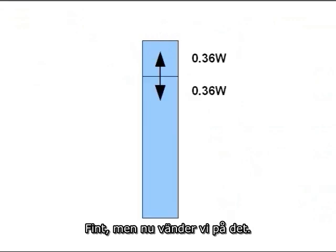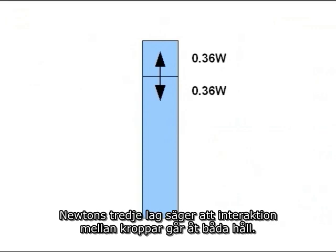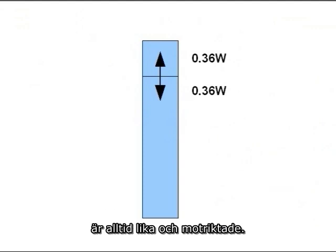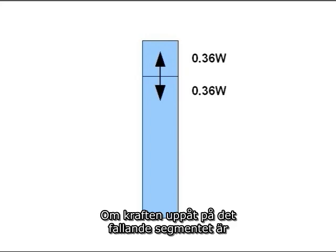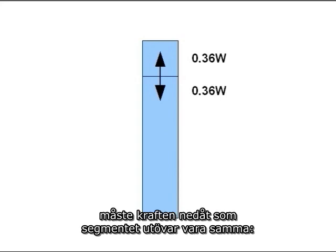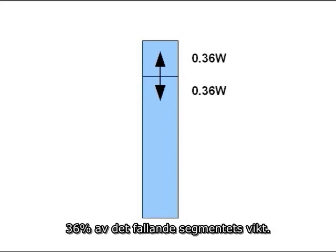But now turn it around. Newton's Third Law says interactions between objects work both ways. The forces two objects exert on each other are always equal and opposite. If the upward force acting on the falling block is 36% of the weight of the falling block, the downward force exerted by the falling block must be exactly the same — 36% of the weight of the falling block.